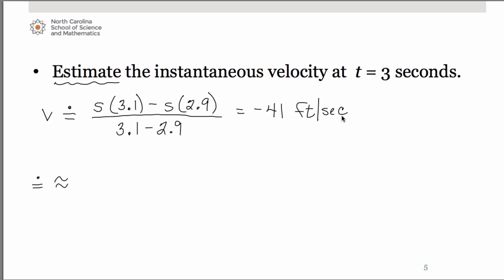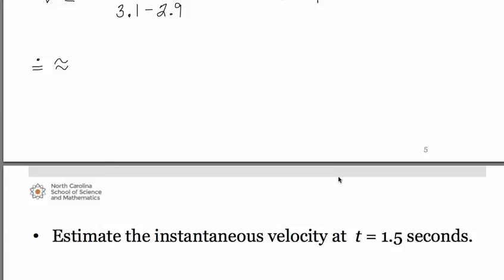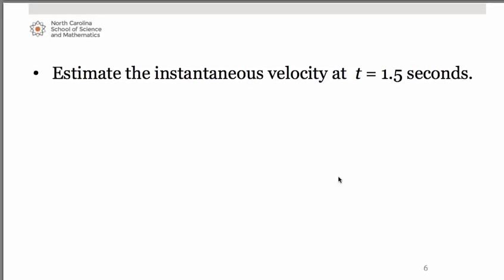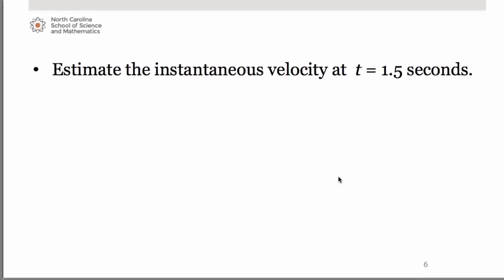So let's do another one. Let's try one and a half seconds. And we're going to use the same idea of choosing t values surrounding 1.5 seconds. Don't forget your approximately equal to. So let's stick to using a tenth above and a tenth below. That seemed to work well before.